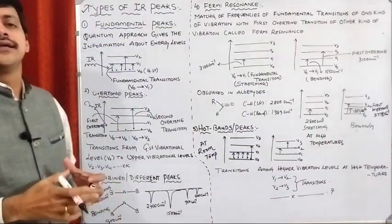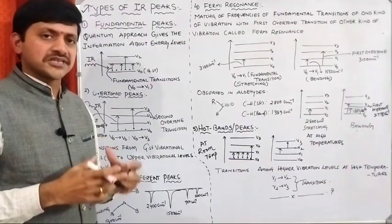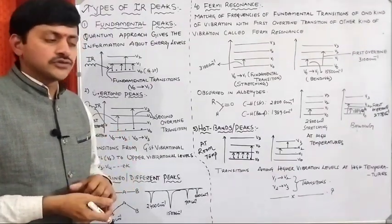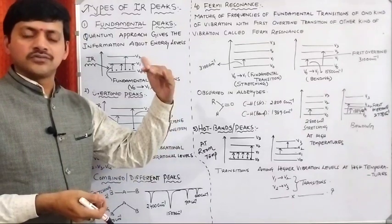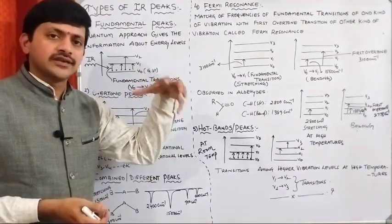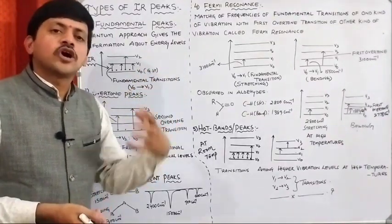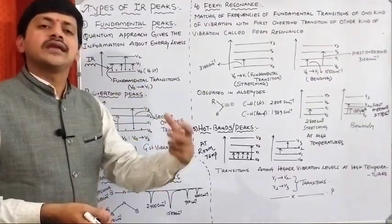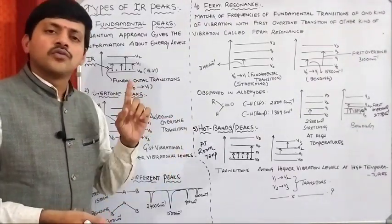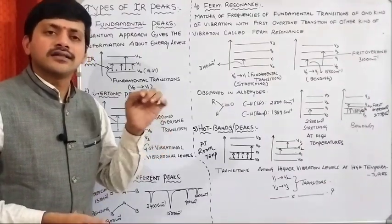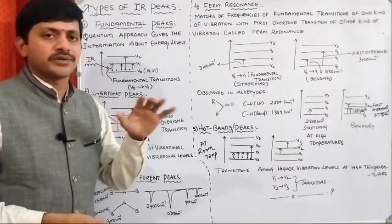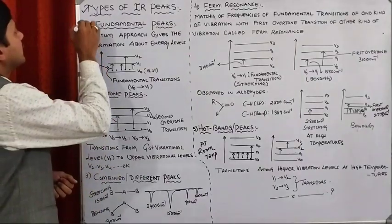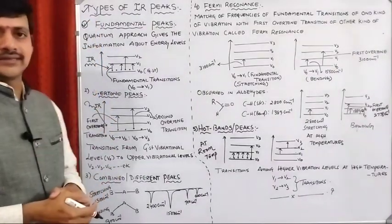We already know that different kinds of transitions take place between the vibrational levels. During these transitions, absorption of energy takes place, and the absorbed energy gives a corresponding peak or signal. So what are the types of peaks or bands present in IR? The first type is fundamental peaks.